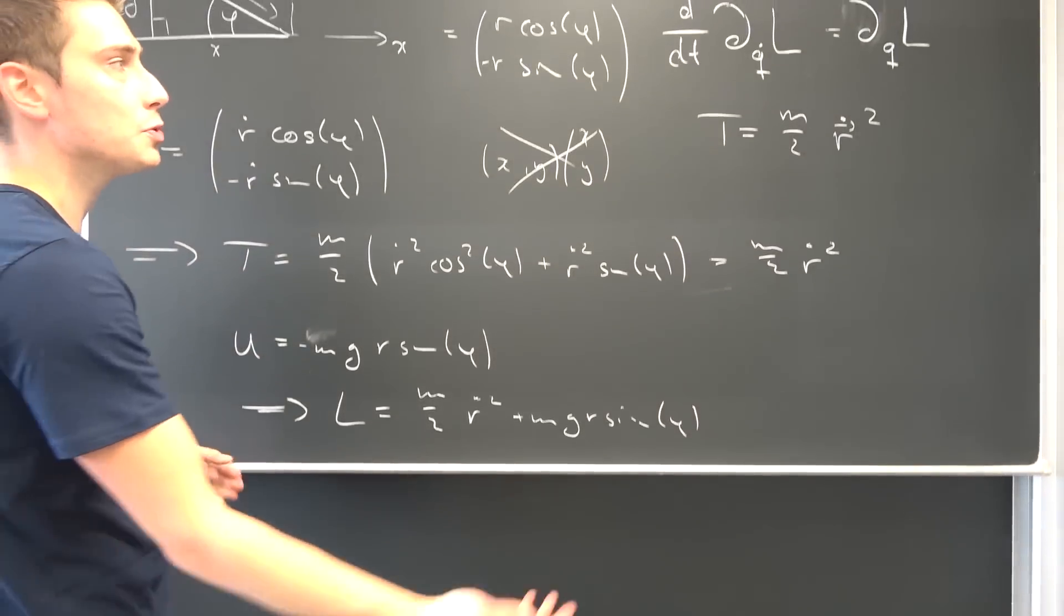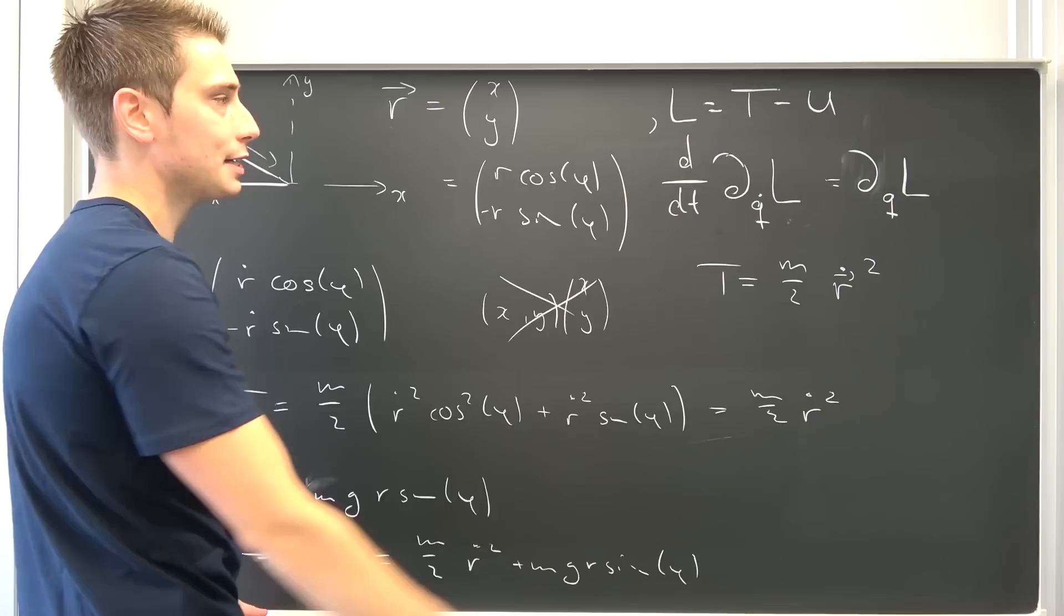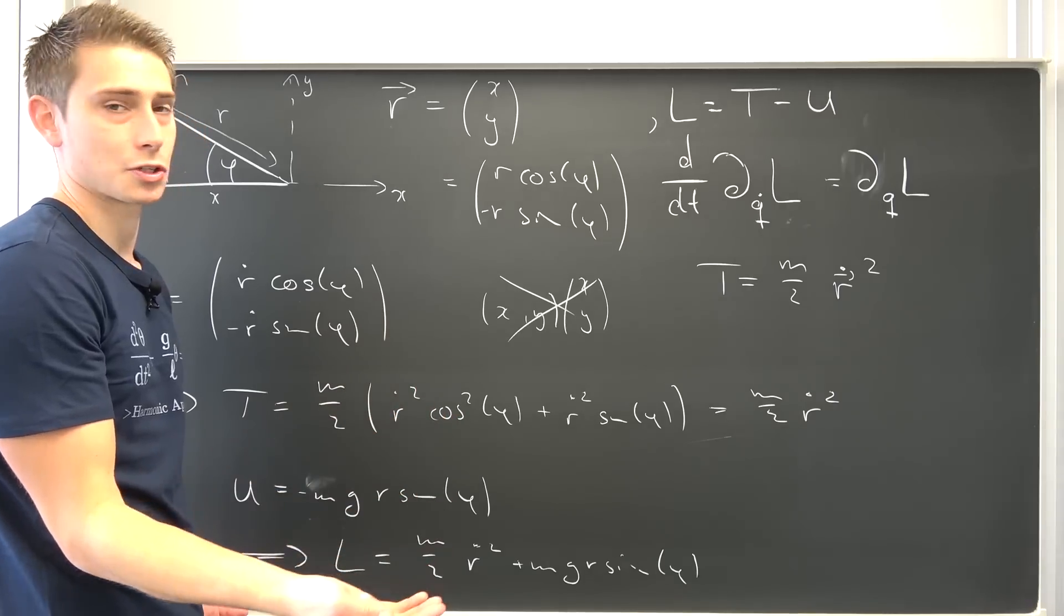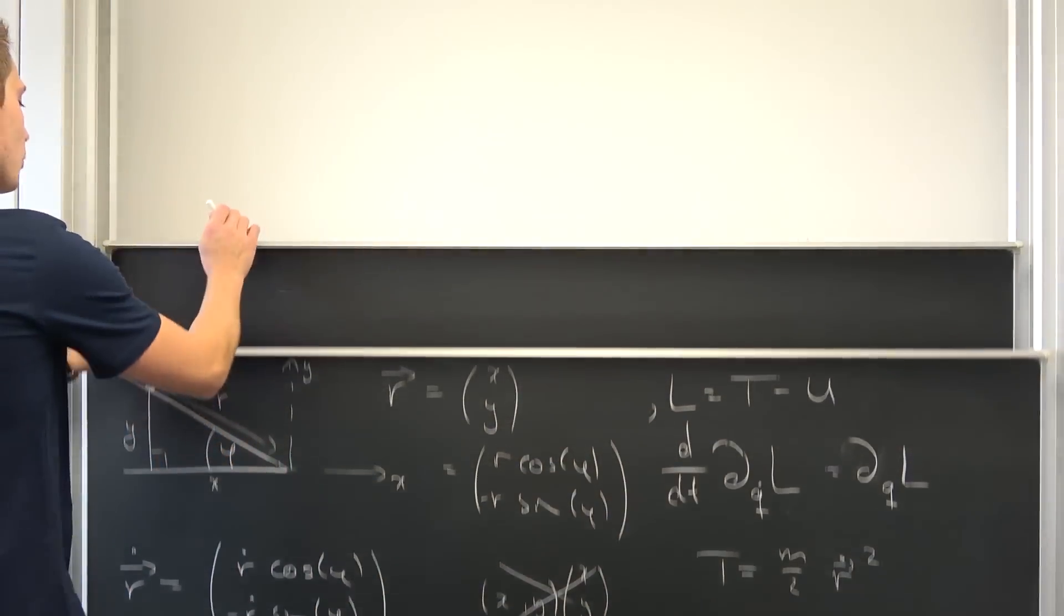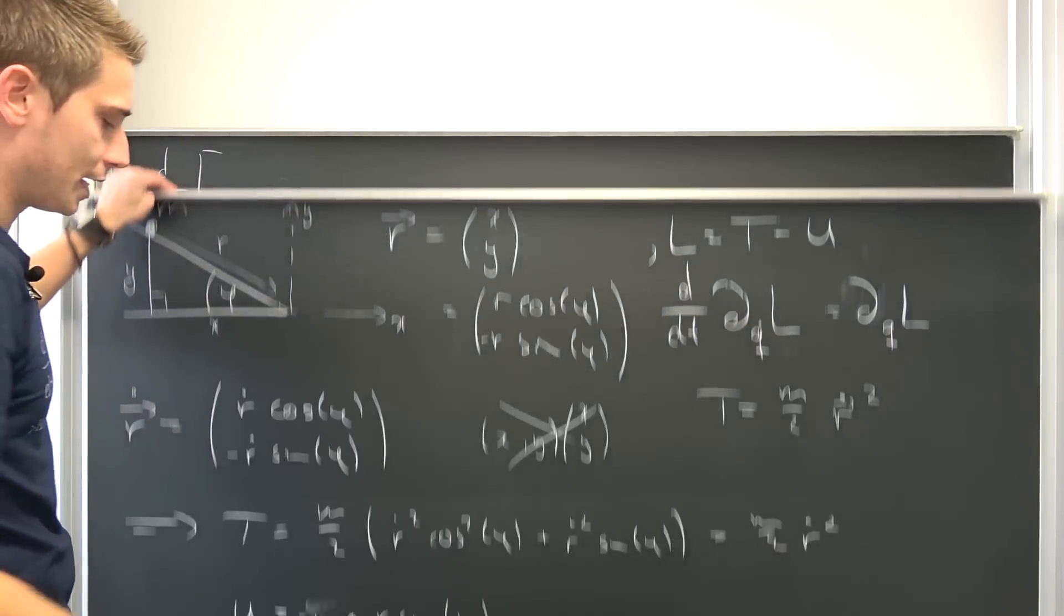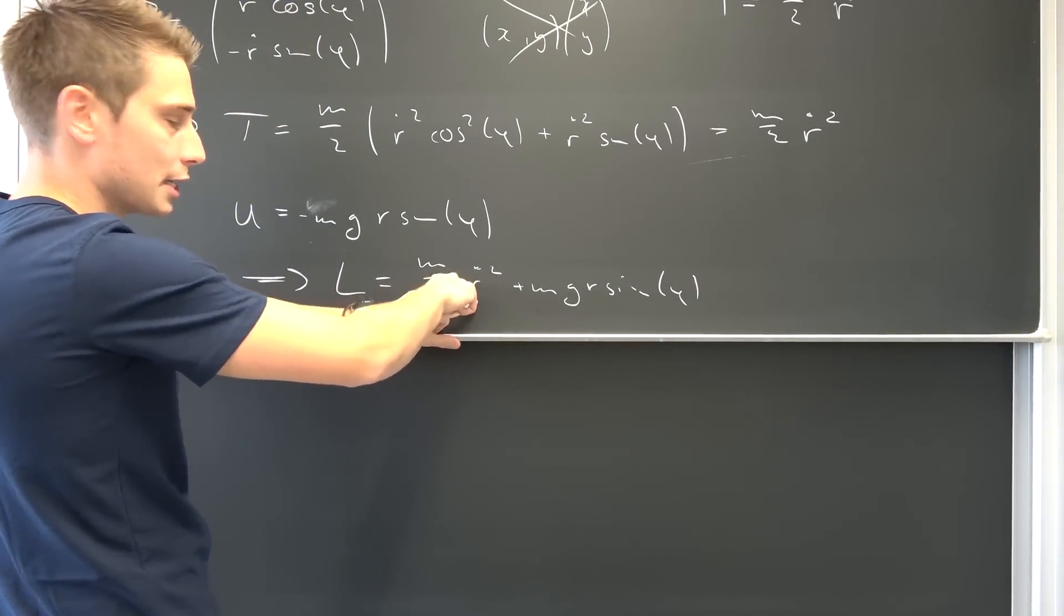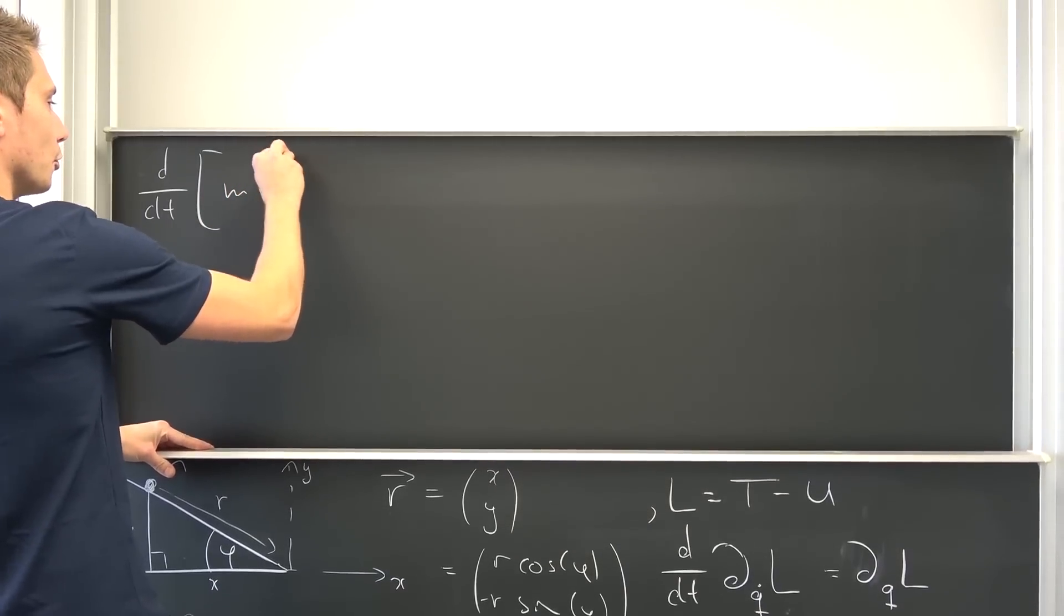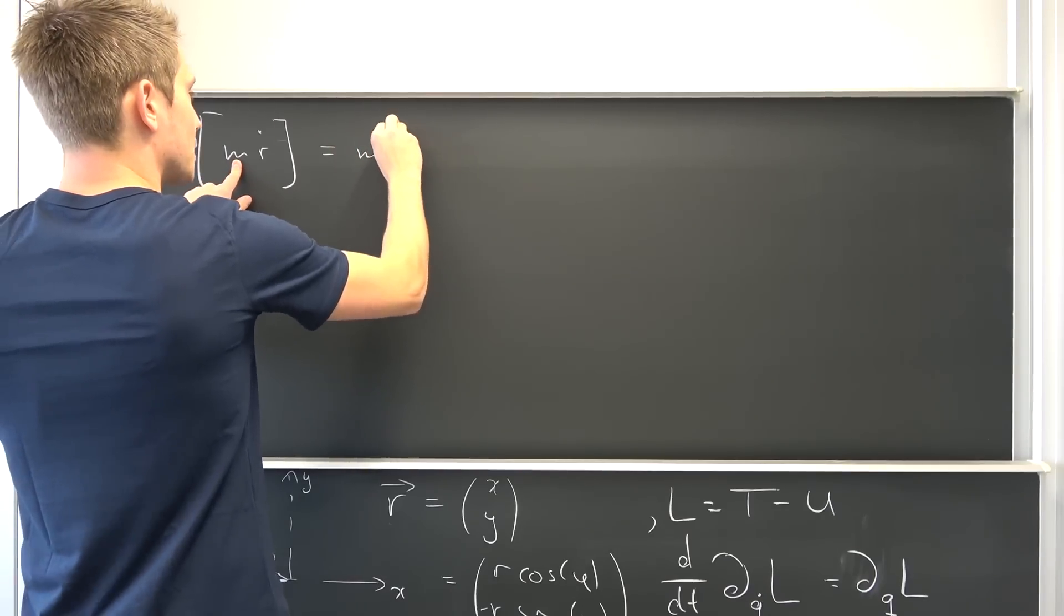Now we simply have to use our Euler Lagrange equations. We are going to start with this side. At first, we would like to differentiate our Lagrangian partially with respect to the derivative of our constraint, time derivative of our constraint, meaning r dot in this case. Meaning we are going to end up with d dt of L differentiated with respect to r dot. This is independent of r dot, it's going to vanish, we are going to drag the 2 down. Meaning we are actually going to end up with m times r dot. And if we were to differentiate this thing with respect to time, our mass stays constant, meaning we are simply going to end up with m times r double dot.